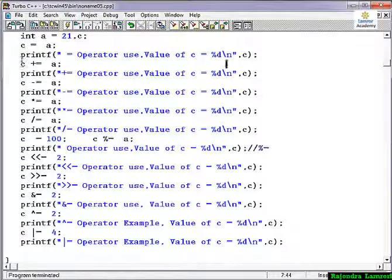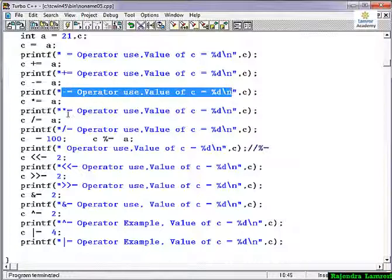Here I have taken c equal to plus of equal of a. Means here I first add the value and then assign the value. So c equal to c plus a. 21 plus I have taken here c 21. 21 plus a equal to 21, means 42 will be printing here. Here I am taking the minus c equal to c minus a. Means 42 minus 21. Here it will show you 21 back.